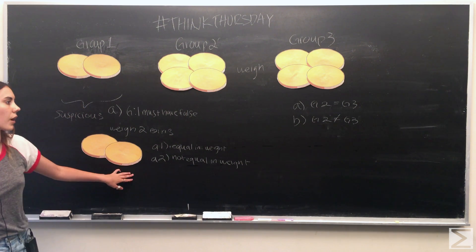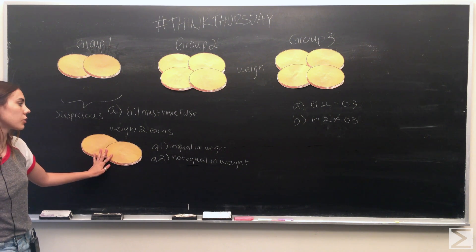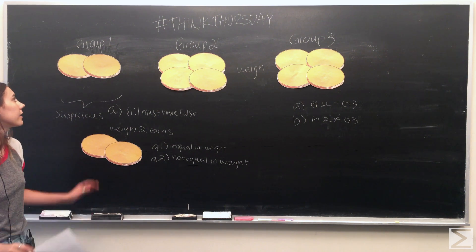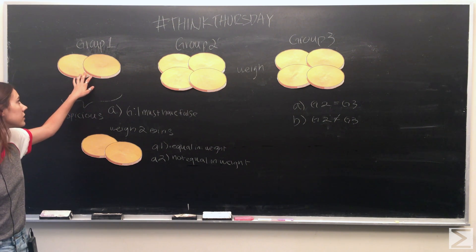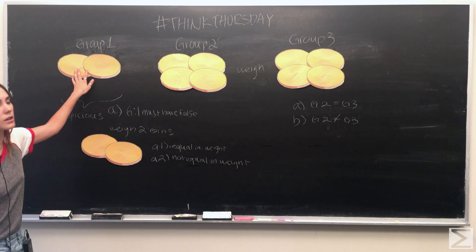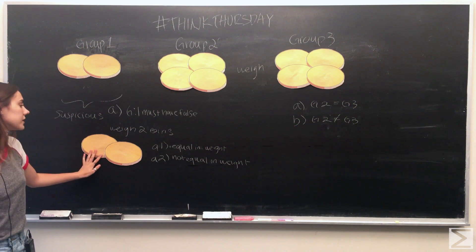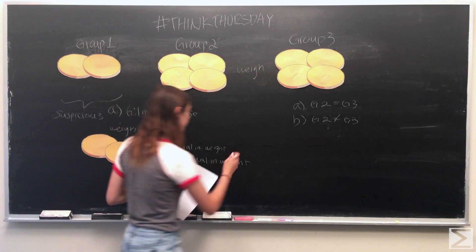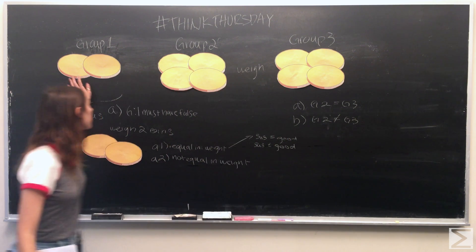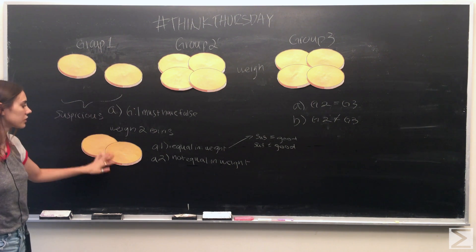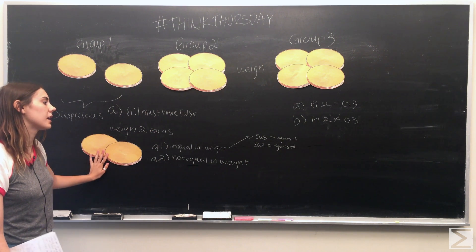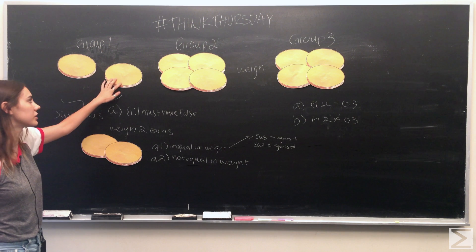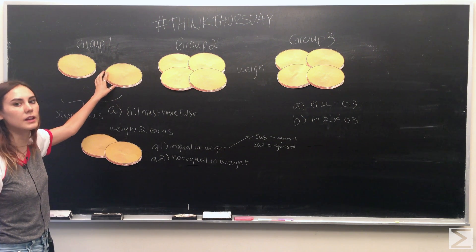The possibilities from case A split into A1 and A2: these two suspicious coins are either equal in weight, or they are not equal in weight. In case A1, we know that one of the two remaining suspicious coins has to be false. We then weigh one of those coins against one of the coins we already weighed, knowing those are now good coins. Either the suspicious coin equals the good coin — meaning the remaining suspicious coin is false — or the suspicious coin does not equal the good coin, meaning that coin is false.